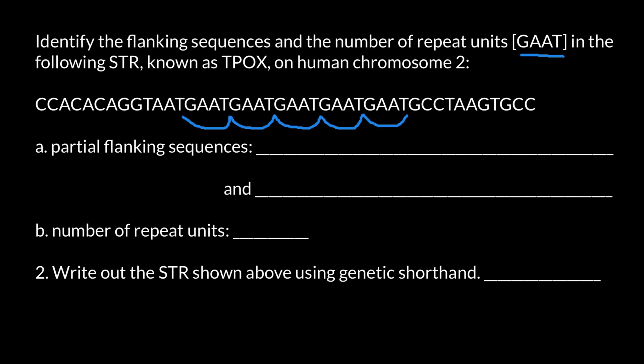So it repeats one, two, three, four, five times. We also have to find the flanking regions — all the rest of the sequence would be the flanking regions.